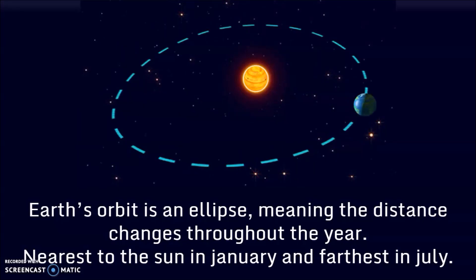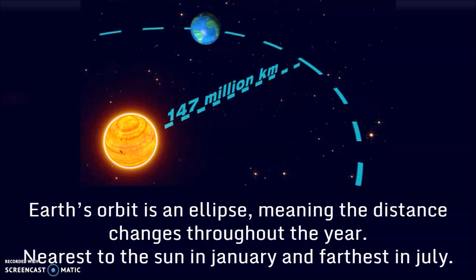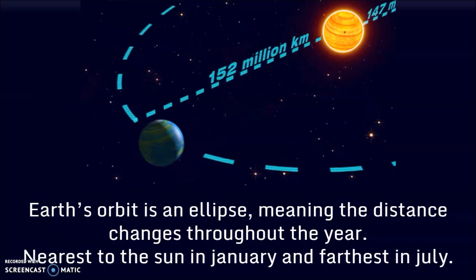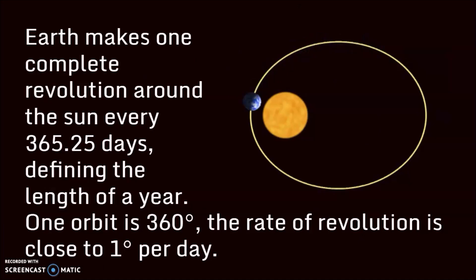Earth's orbit is an ellipse, meaning the distance will change throughout the whole year. The Earth is nearest to the Sun in January, and is farthest from the Sun in July. Earth makes one complete revolution around the Sun every 365 and a quarter days, and this defines the length of a year.